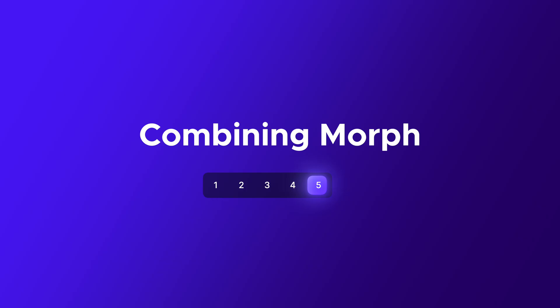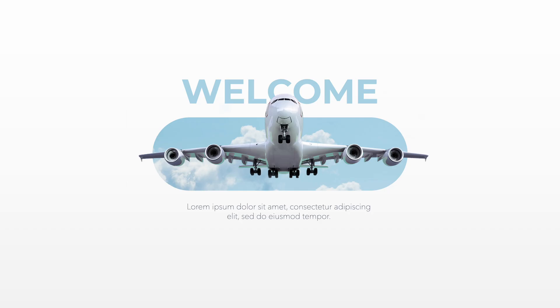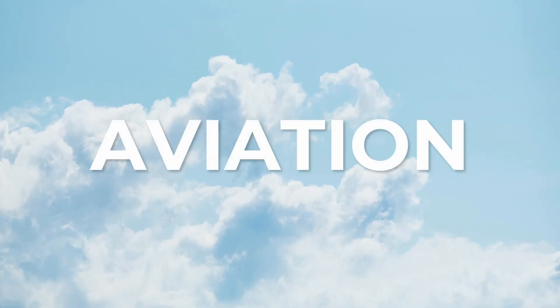Now let's look at number five, which is combining everything we know about Morph and really pushing the limits — having text and images all animated in a full slide deck. Here we can see the opening slide with an airplane on screen, which expands the images. We have a welcome word, and as soon as we click the background image goes to full screen.